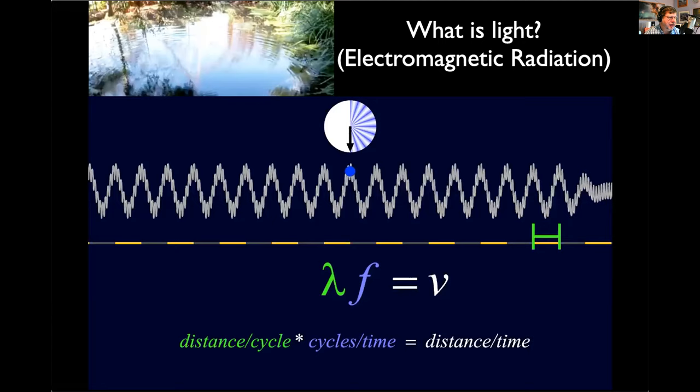We're familiar with the gravitational field. We jump up — there's not a spring pulling us back down to the Earth; there's something invisible that pulls us down, and that invisibility is the gravitational field. The same thing is true with electromagnetism — light, radio waves, and everything we'll be talking about. It's a field. We can't see it, we can't taste it, it isn't a thing. But it exists in space and it makes things do stuff.